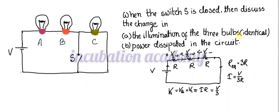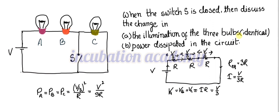Since the potential drop across each bulb is V/3 and their resistances are all equal, the power dissipated in each bulb is also equal: PA = PB = PC. This power is (V/3)² divided by R, which equals V²/9R. This is the power dissipated in each individual bulb when the switch is open.